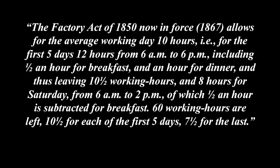The Factory Act of 1850, now in force, allows for an average working day of 10 hours — for the first 5 days, 12 hours from 6am to 6pm, including half an hour for breakfast and an hour for dinner, leaving 10 and a half working hours, and 8 hours for Saturday, of which half an hour is subtracted for breakfast, leaving 7 and a half. This gives 60 working hours total: 10 and a half for each of the first 5 days and 7 and a half for the last.